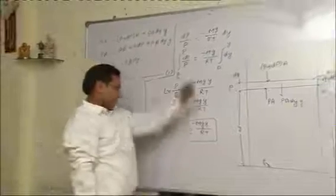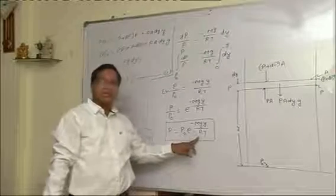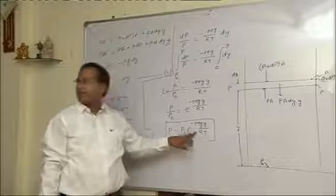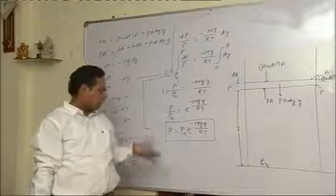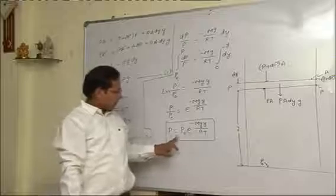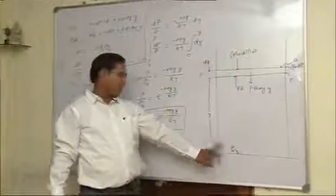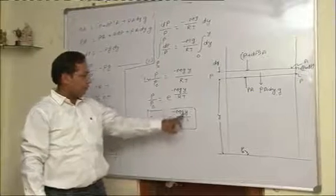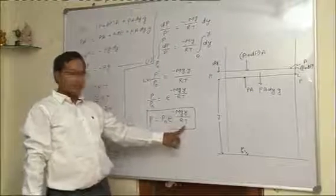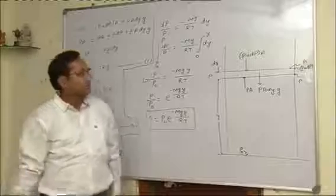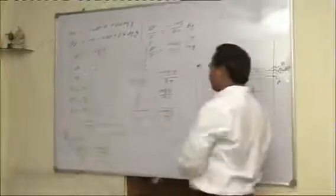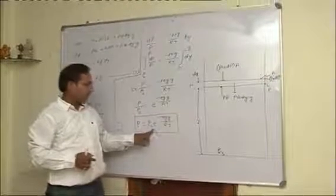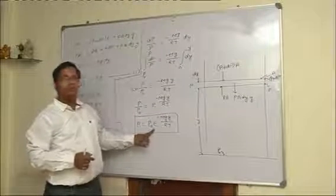Now you see, we are seeing that pressure with respect to height is decreasing. Pressure is maximum at the ground. And at some height, pressure is P not e to the power minus mgy upon RT. This means variation of pressure varies exponentially. Pressure with respect to height decreases.